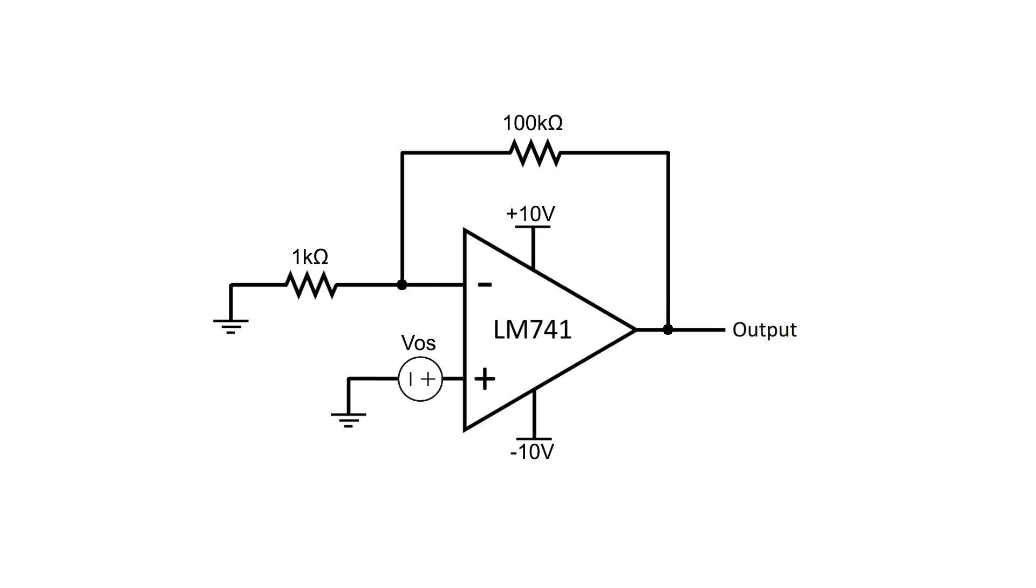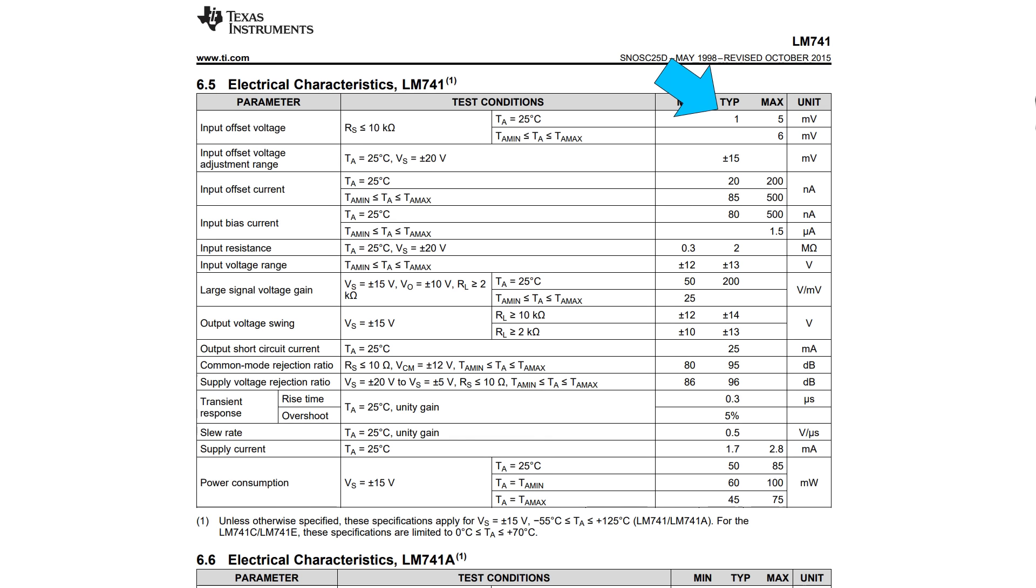You sometimes see the input offset voltage modeled like this, or like this, and it can even be a negative offset voltage. The point is that with any op-amp, you have a small unwanted DC voltage difference between the inverting and non-inverting inputs. This will get amplified whether you like it or not, and on a 741 it's especially bad.